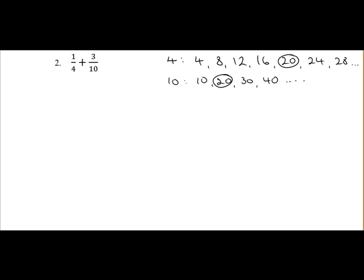So our new sum now is 5 over 20 plus 6 over 20. 6 plus 5 is 11, so our answer is 11 over 20.